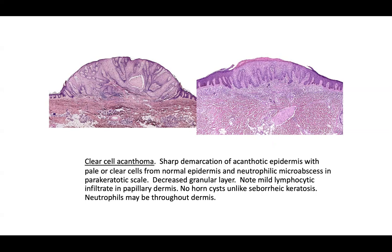You may see neutrophilic micro-abscesses in a parakeratotic scale — similar to psoriasis — and decreased granular layer, which also looks like psoriasis, along with a mild lymphocytic infiltrate in the papillary dermis. Unlike seborrheic keratosis, you don't have horn cysts. On a board exam digital slide, you'll need to assess the entire epidermis and make sure you don't see an abrupt well-demarcated change at the edge representing a clear cell acanthoma.